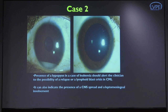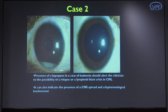Ophthalmologists can play a very important role here because the presence of a hypopion in cases of leukemia should alert a clinician to the possibility of either a relapse or an impending blast crisis. Cases of relapse, CNS spread, and leptomeningeal involvement can be heralded by a hypopion, as malignant cells can enter the anterior chamber via the ciliary arteries and the ethmoidal route. So CNS spread and blast crisis can both be assessed and evaluated through ophthalmic examination.